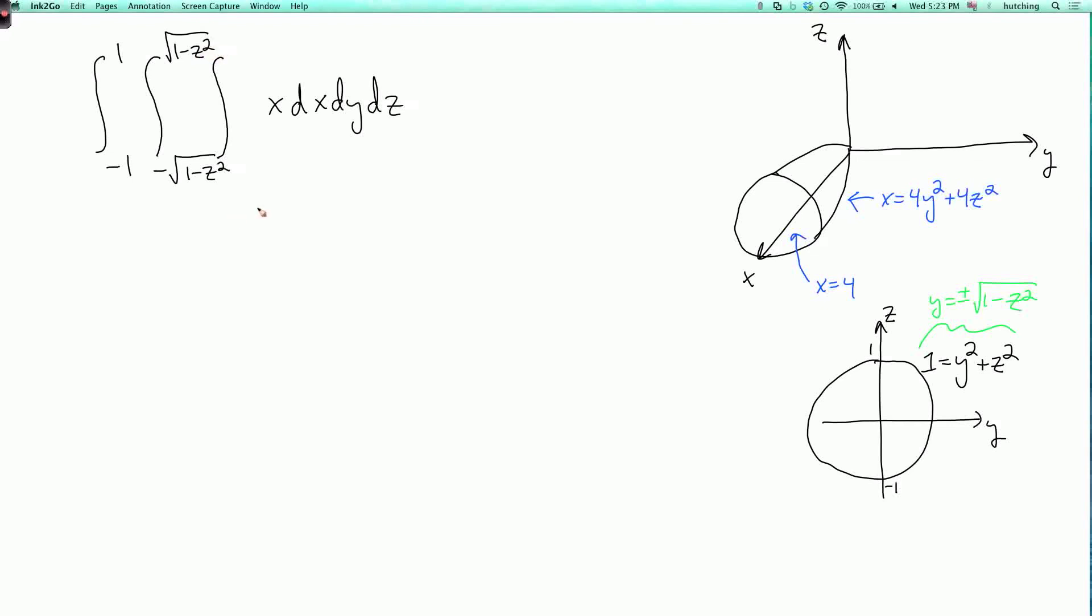Now, the inner integral is the trickiest one. If we fixed y and z, what is the possible range of x? Now, in general, x goes from 0 to 4. But for a specific y and z, x cannot necessarily cover that whole range. What we're doing here is, if we fix y and z and vary x, then we get a line that moves in the x direction. Now, if we start at x equals 4, it's going to be inside the region for a while, and then at some point, it's going to poke out of the boundary surface.